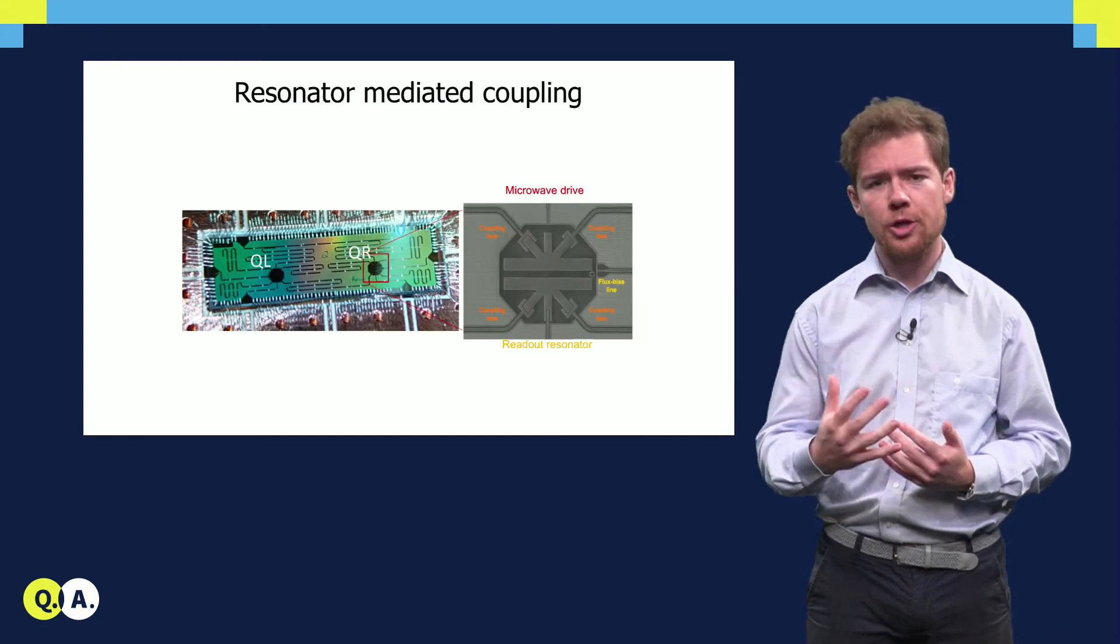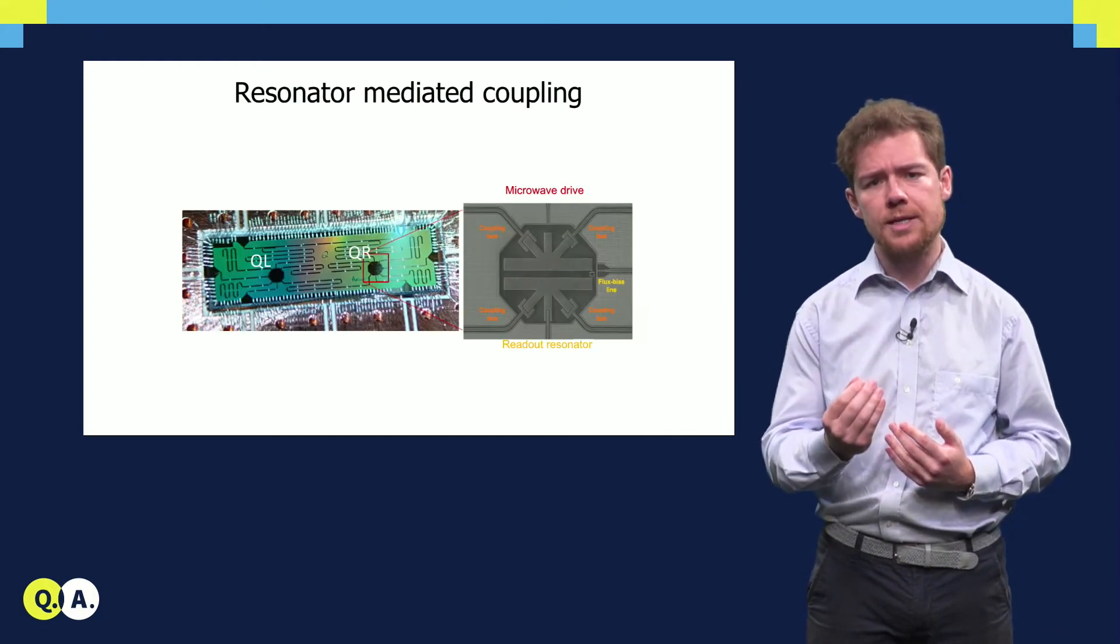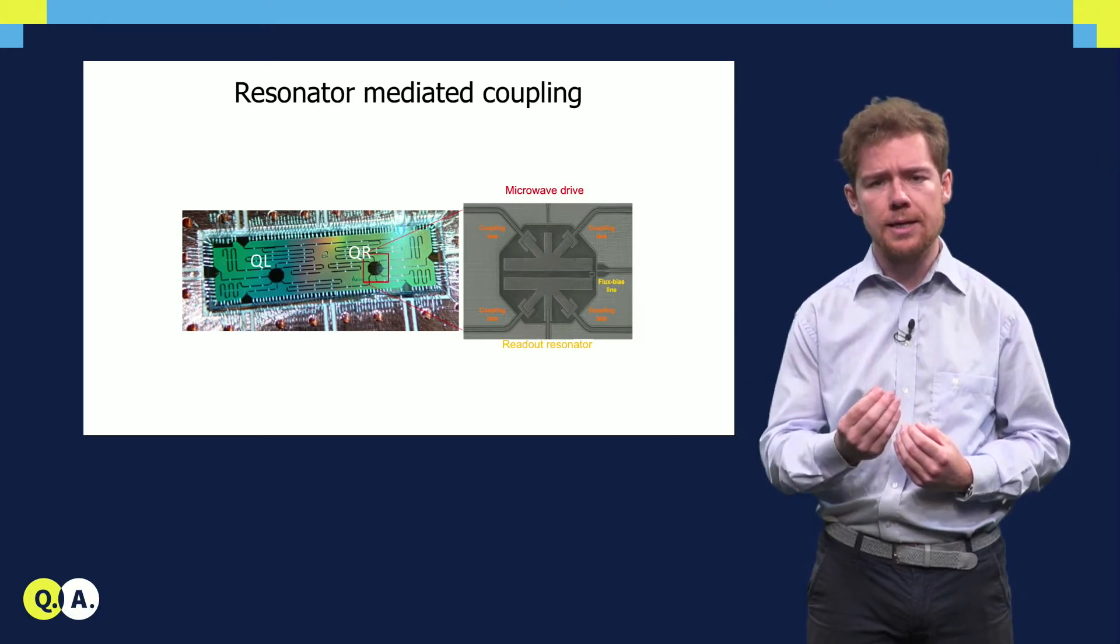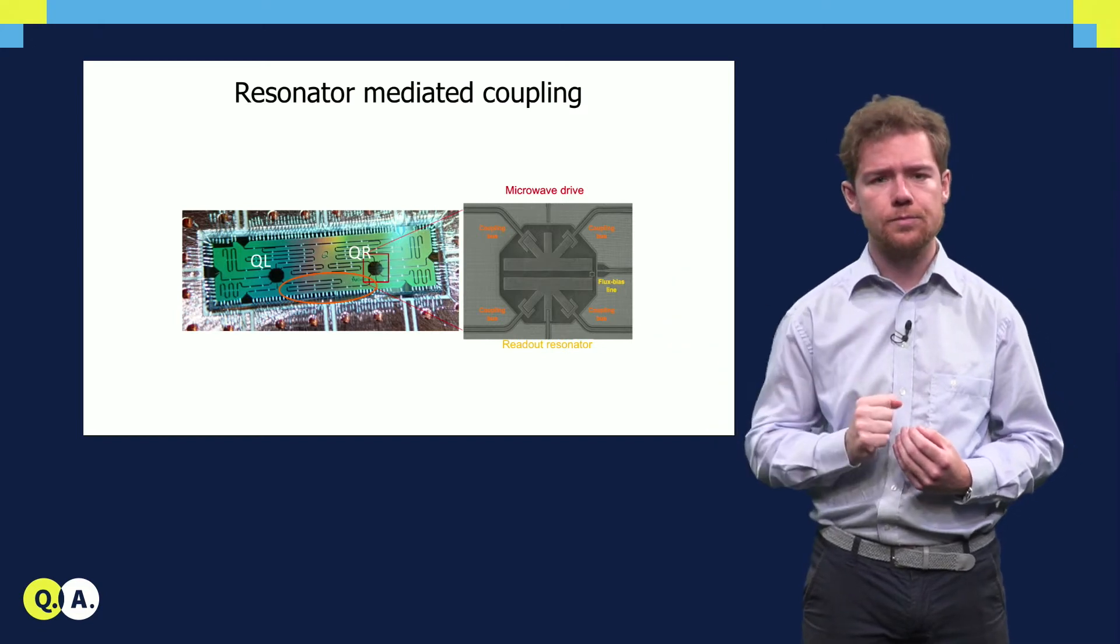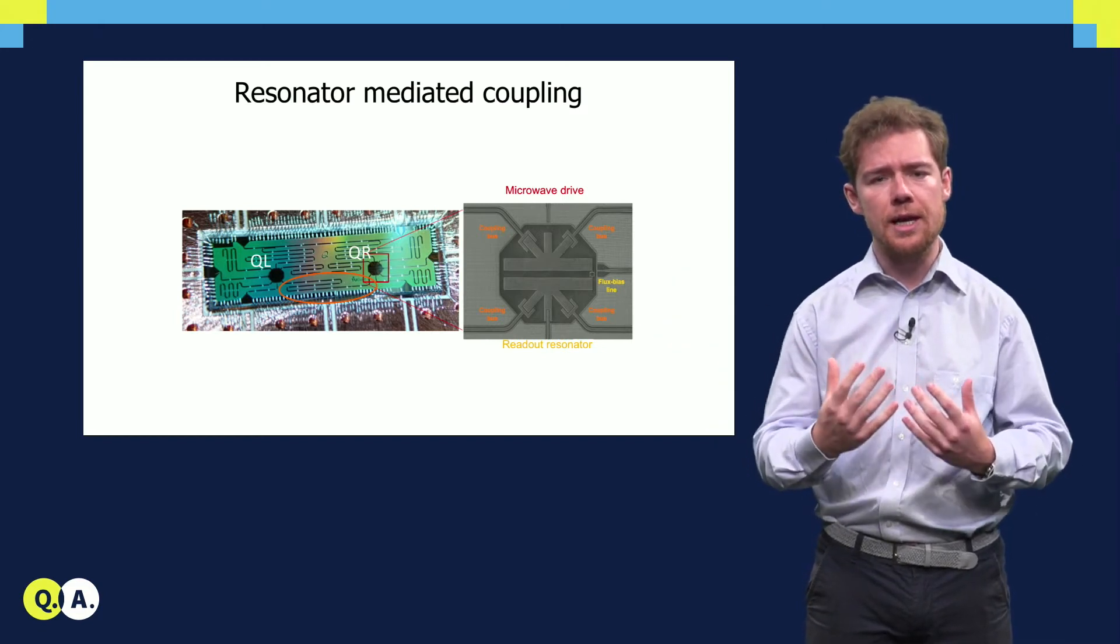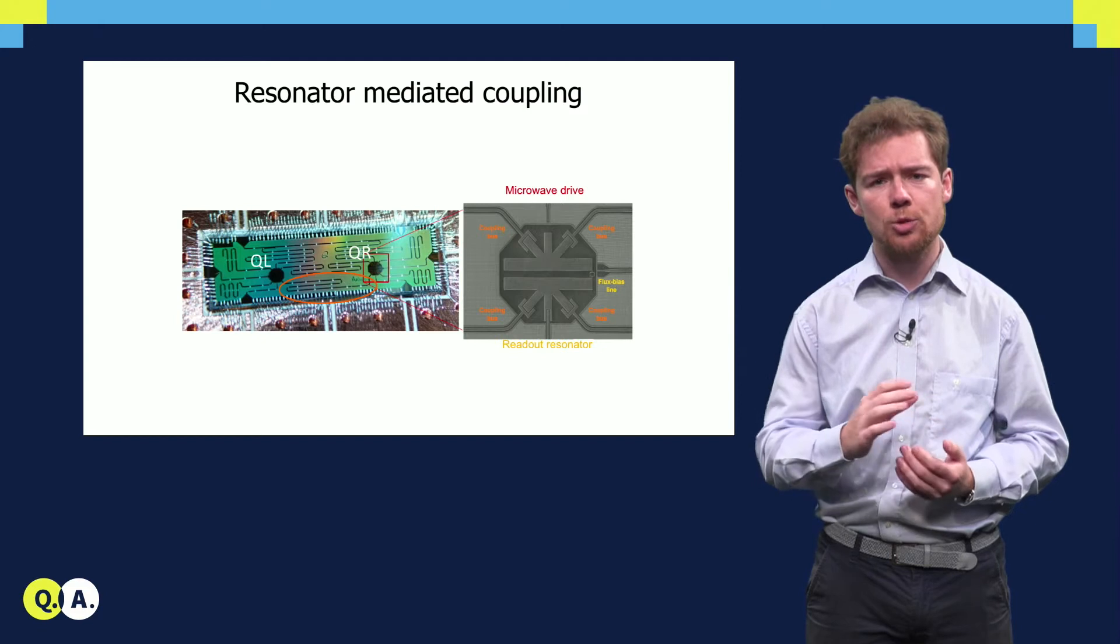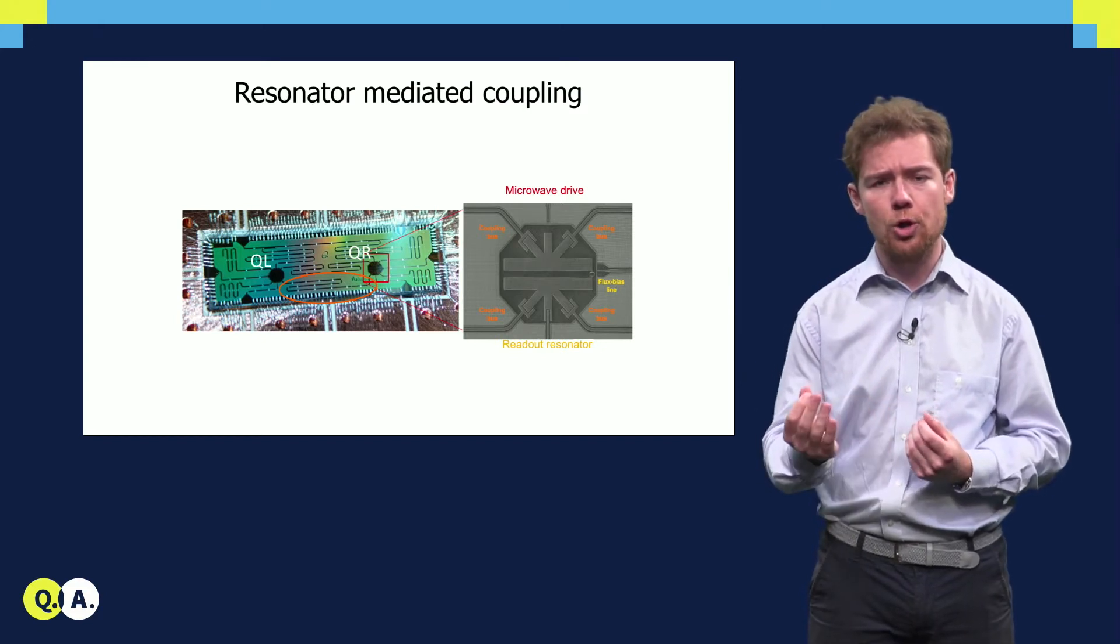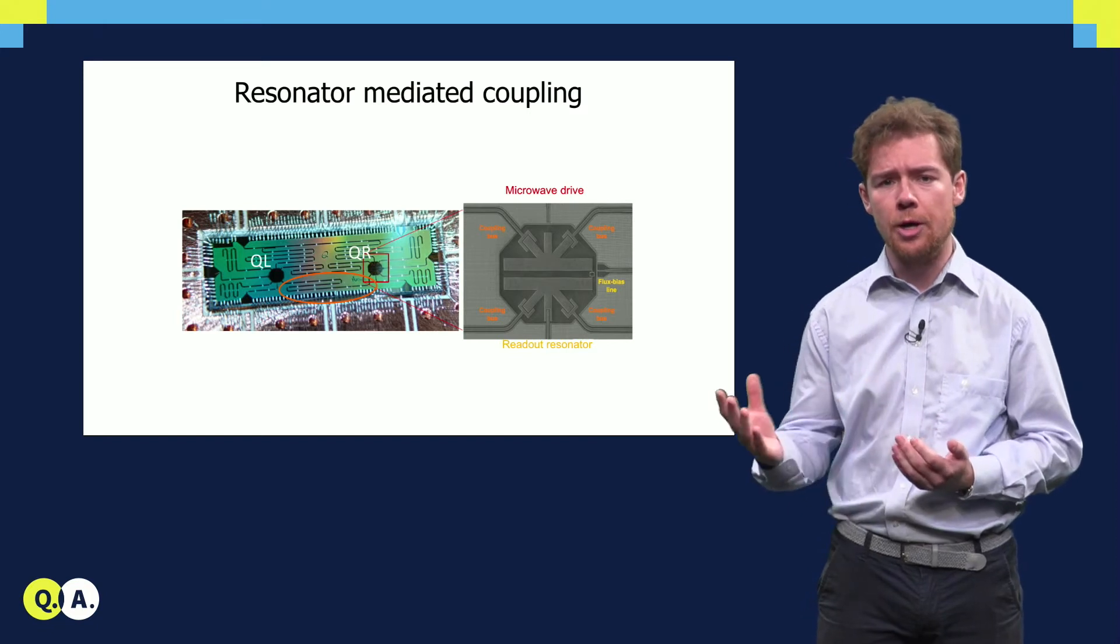In superconducting transmon qubits, two qubit gates are based on a transversal qubit-qubit coupling. This coupling is mediated through a coupling resonator. Because the interaction is mediated by a coupling resonator, it is possible to couple physically separated qubits, making room for other components on the chip, such as readout resonators.